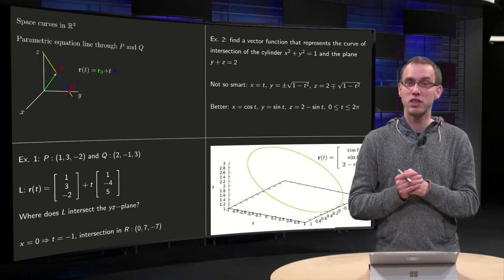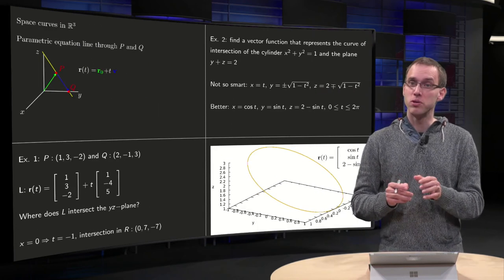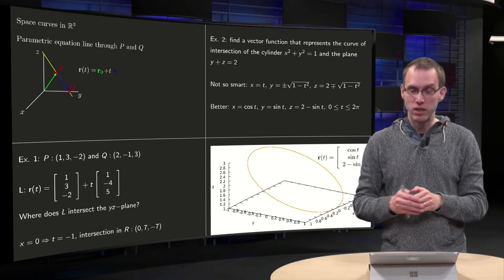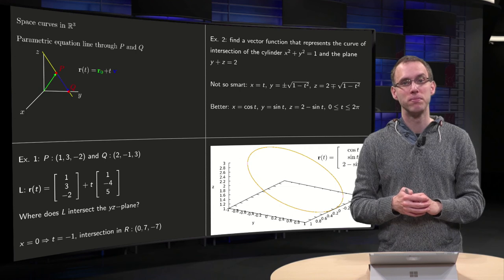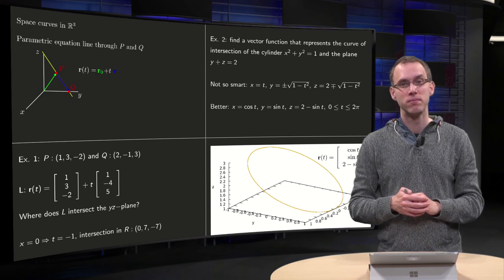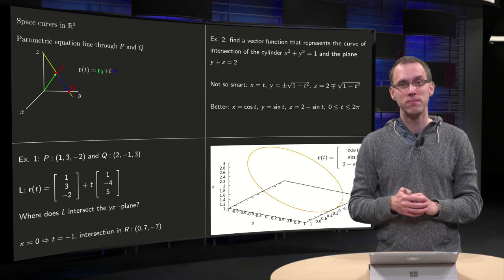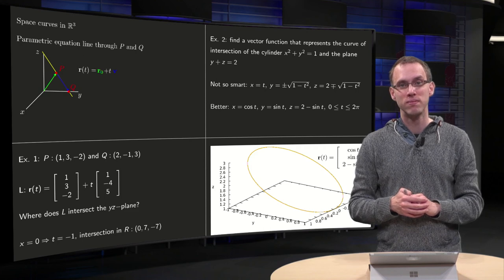And finally some sketch of the curve. You see it is the intersection of a cylinder and a plane, so you get an ellipse in three space. Here you are. Thank you.